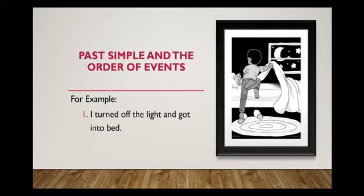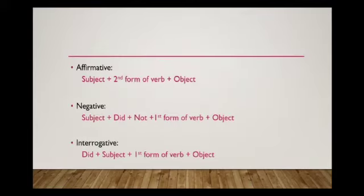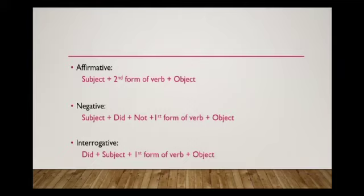Now we will learn the sentence structure for affirmative, negative, and question forms of simple past tense. For affirmative sentences: Subject + second form of the verb + object. For negative sentences: Subject + did + not + first form of the verb + object. Note that 'did' is the past form of 'do' — do, did, done.